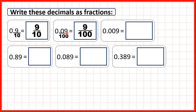Now for 0.009, we need to remember that we have tenths, then hundredths, then thousandths. We draw a line across from the decimal point and write a denominator of 1000 — three zeros — because we have three digits after the decimal point. So that's 9 over 1000 because the 9 is in the thousandths place.